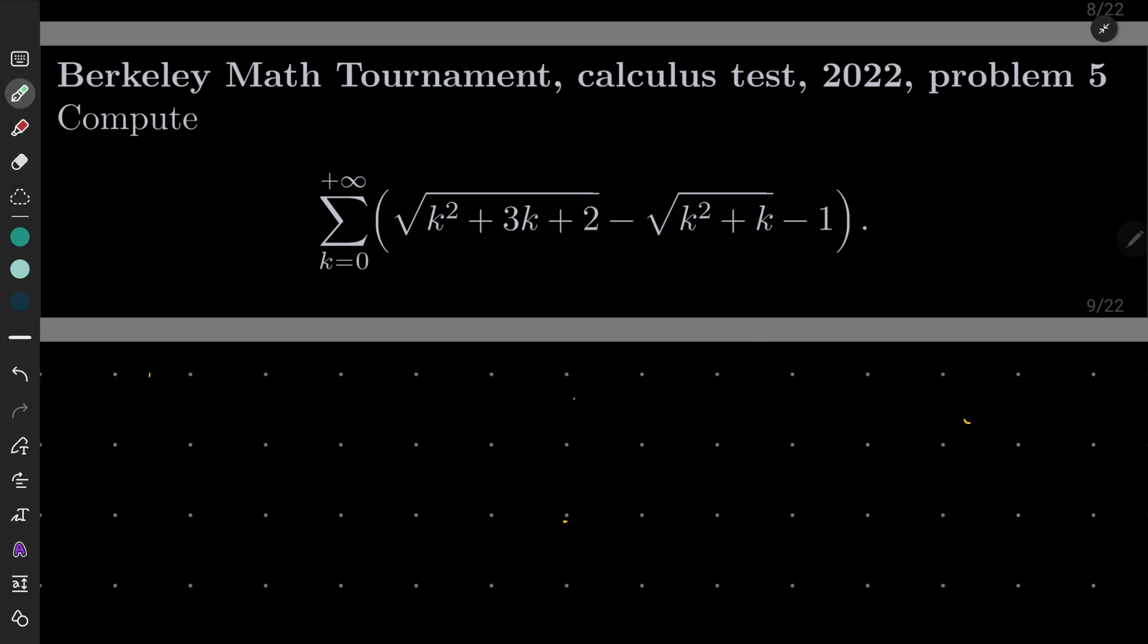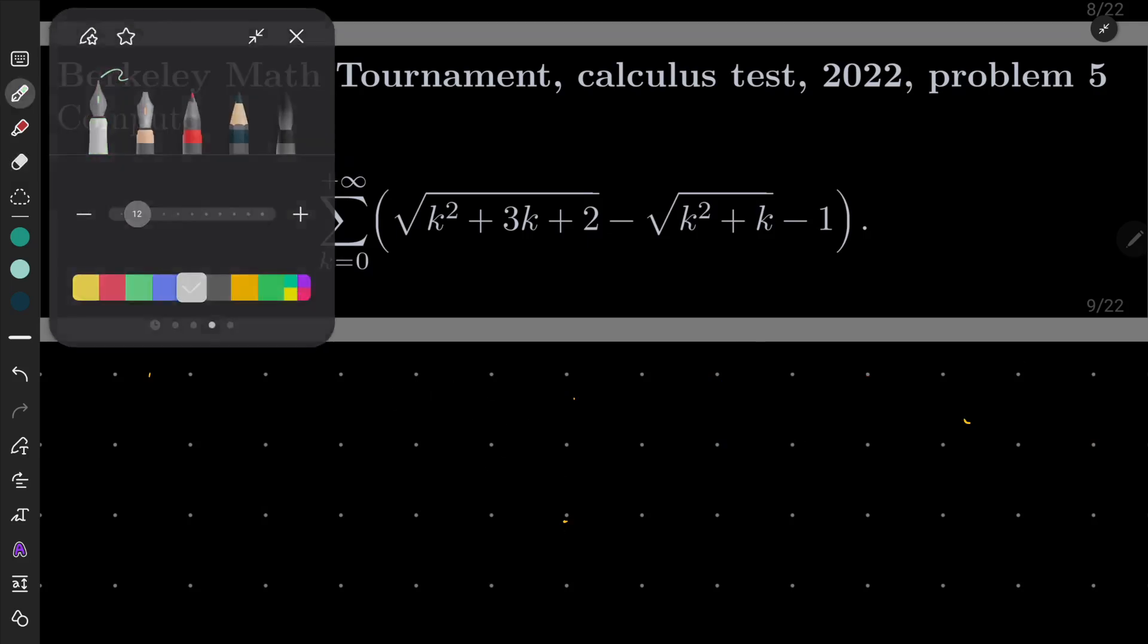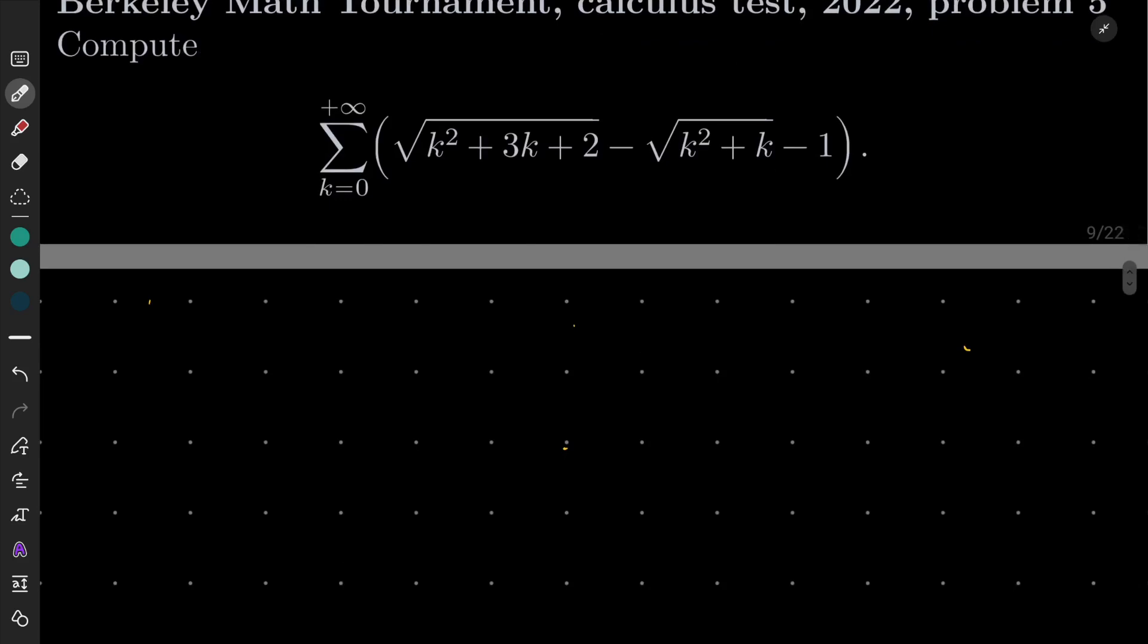Okay, so my solution. Maybe I will first deal with these square roots because notice that this is a quadratic function under our root and it can be factorized as (k+1)(k+2). And in a very similar way k squared plus k can be factorized as k(k+1).